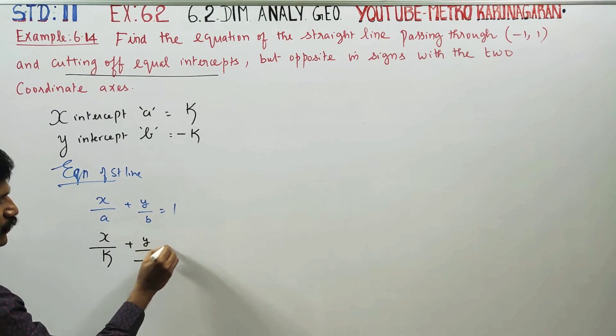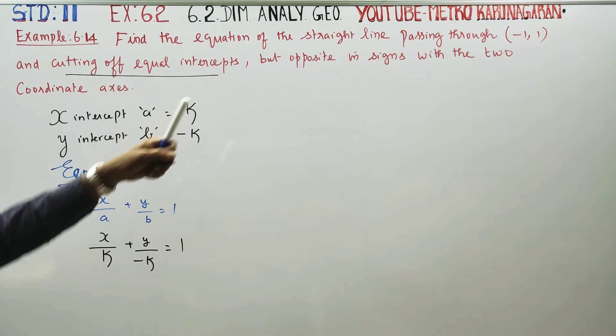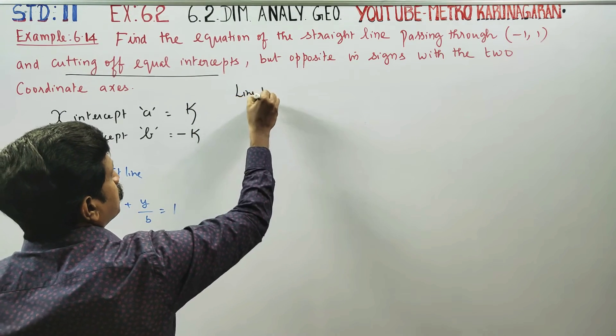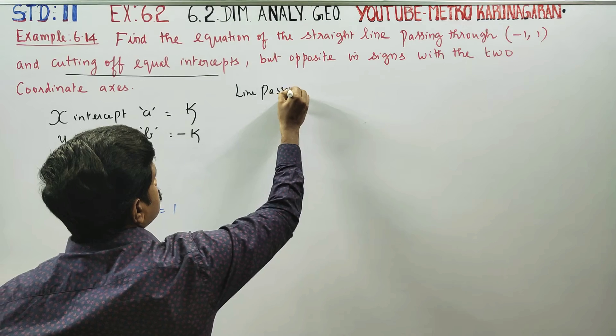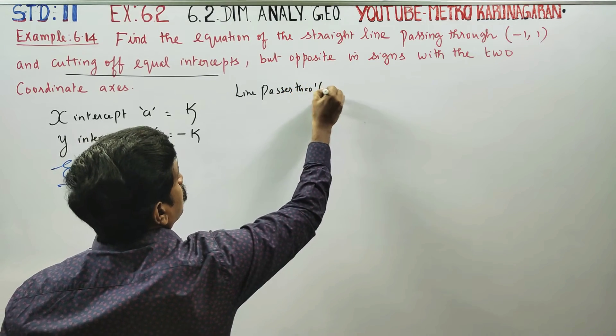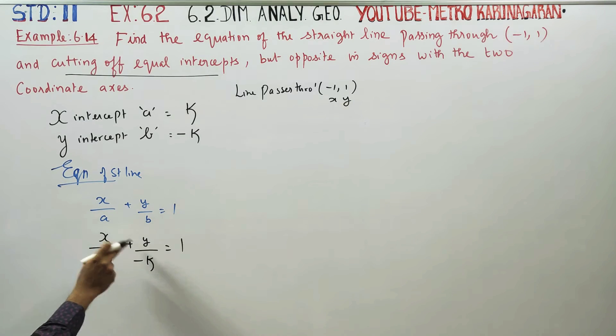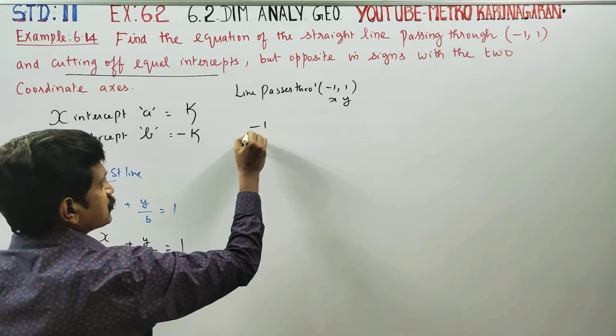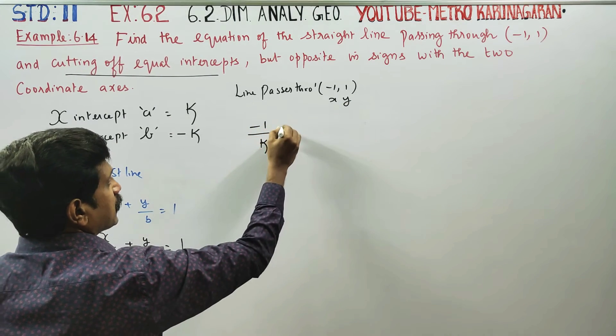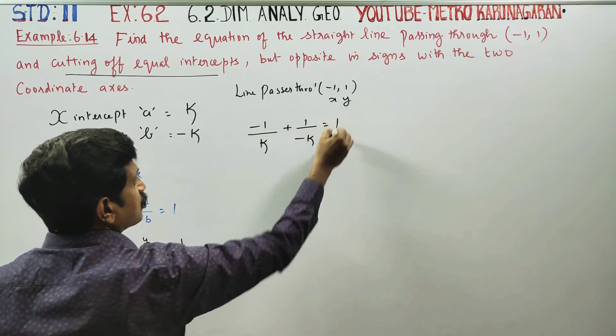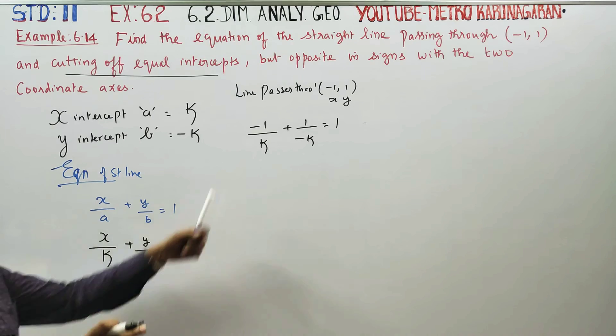x by k, y by minus k is equal to 1. It passes through (-1,1). The line passes through (-1,1), so substitute: minus 1 by k plus y by minus k is equal to 1.